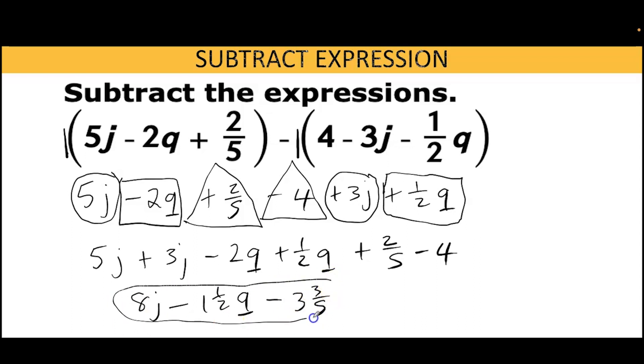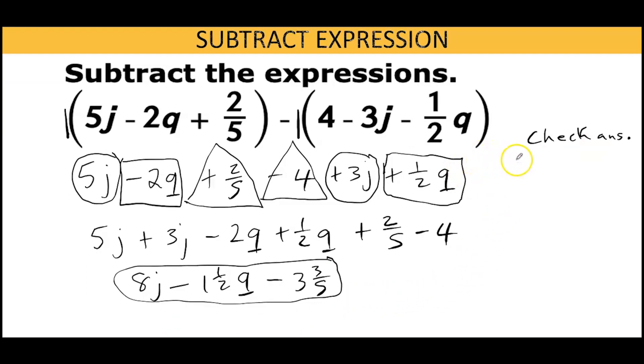So let us check our answer. We're going to let j equal 1 and q equal 0. Substituting in the first expression: 5 times 1 gives us 5, minus 2 times 0 gives us 0, plus 2/5, minus 4, minus 3 times 1 gives us 3, minus 0. When we calculate that we get 22/5.